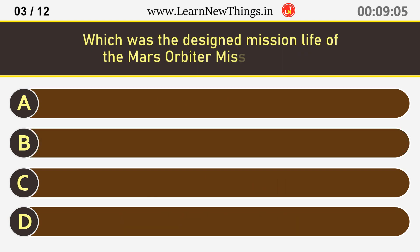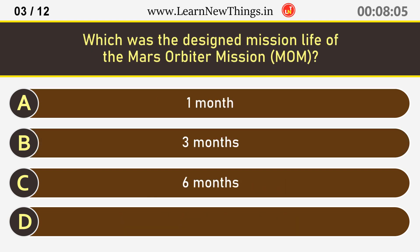Which was the designed mission life of the Mars Orbiter mission? 6 months.